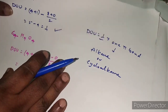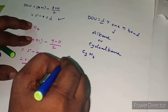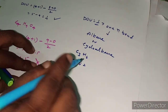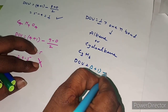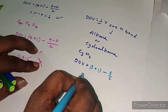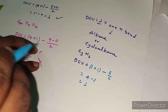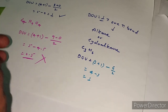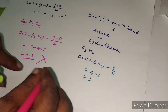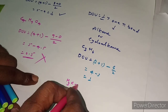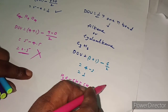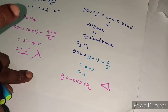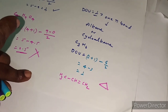For example, take C3H6. DOU = (3 + 1) − (6) / 2 = 4 − 3 = 1. So there is 1 pi bond. This molecule can exist as propene (CH3-CH=CH2) or as cyclopropane — both have the same molecular formula, showing that DOU = 1 means alkene or cycloalkane.